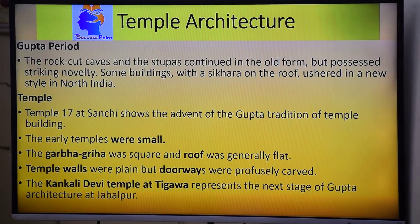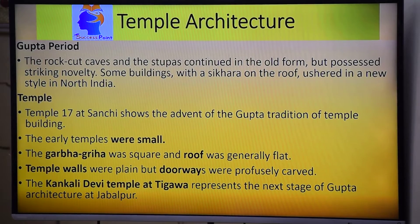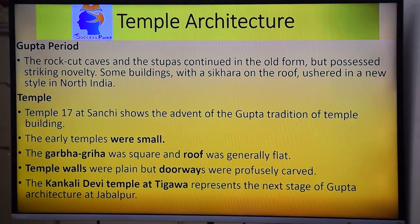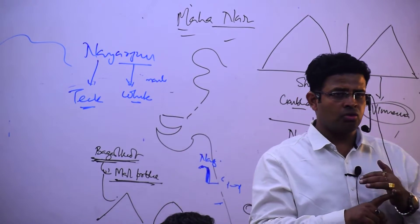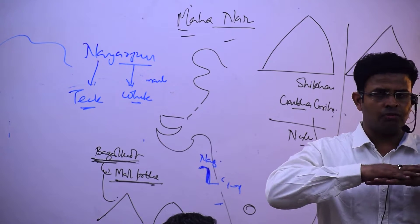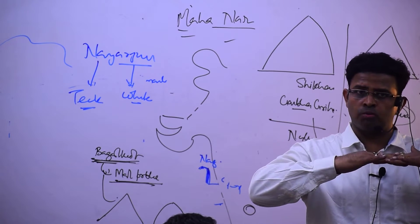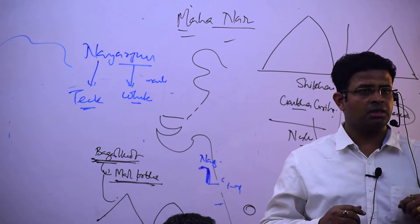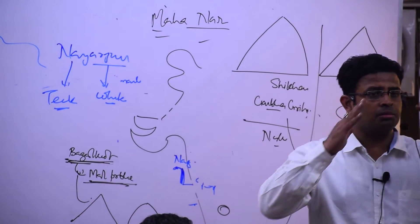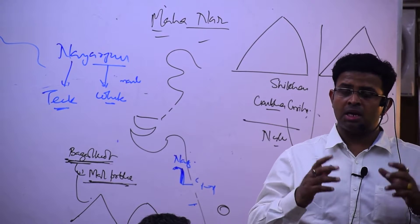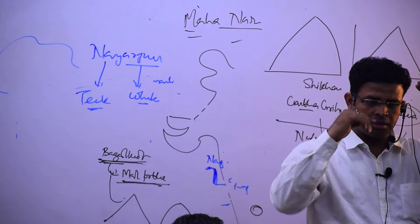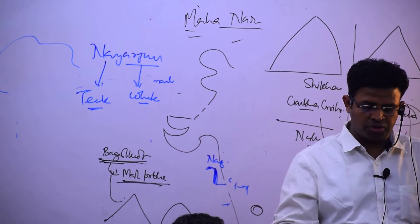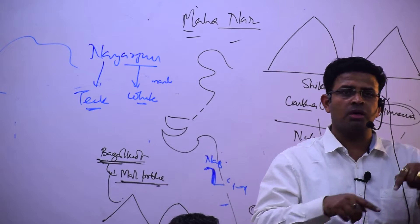After the single-roofed square temple came a two-storey version, and thereafter the Shikhara appeared. The structure moved upward — first one room with a square plan and a roof, then a two-storey room, then the coming of the Shikhara. In the fourth stage, the Shikhara remained but the ground plan was square.